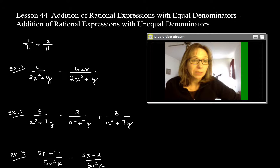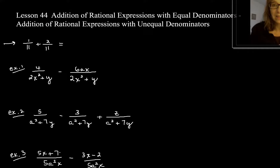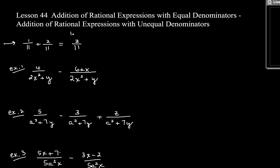You learned this before. These are just basic fractions with equal denominators. So we have 1 eleventh plus 2 elevenths. It's going to be 3 elevenths. So if the denominators are the same, all you do is add the numerator. So it would be 1 plus 2 gives you 3.